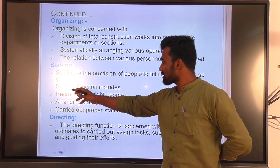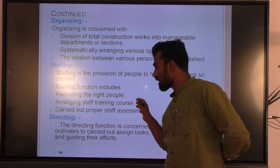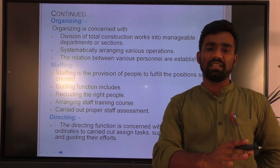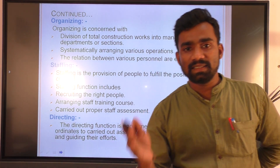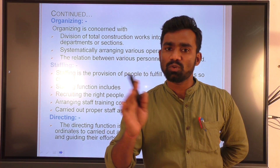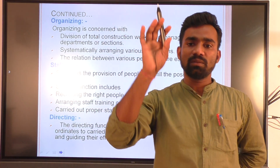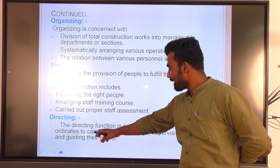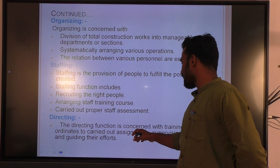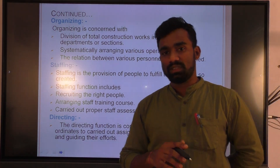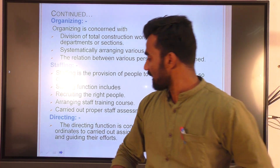Staffing: staff functions include recruiting the right people and carrying out proper staff assessment. You should recruit staff and give them one or two months of training, after which they can be assigned to the field where they are capable to work at the site. Directing means the function of training subordinates to carry out their assigned work — you should direct your assistants to carry out that work.